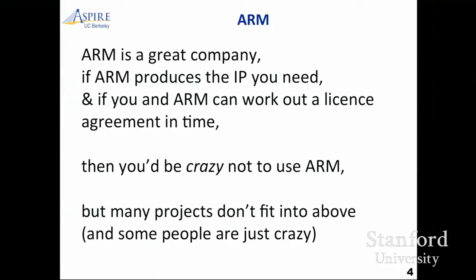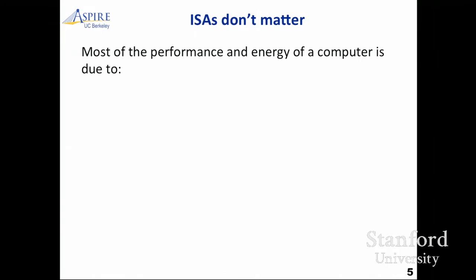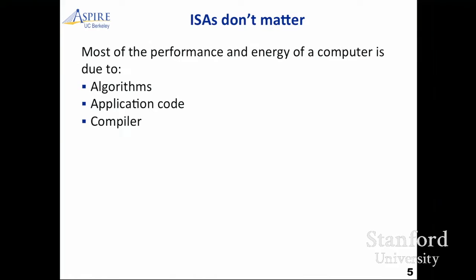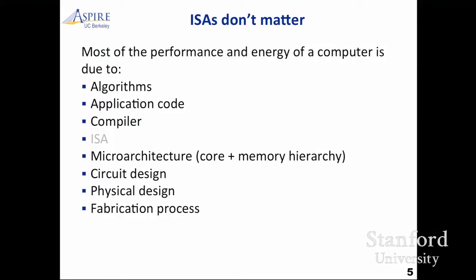So what is an ISA? The first thing I should say about ISAs is they don't matter at all. ISAs are really, really unimportant in the grand scheme of things. If you look at the performance and efficiency of a system, most of it's due to other stuff — like the algorithm you use, how you code it, the compiler you use. There is a little effect from the ISA maybe, but the microarchitecture, the core design, the memory hierarchy, the circuit design, the physical design, the fabrication — those matter far more. Intel's got amazing fabrication technology.